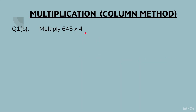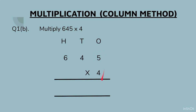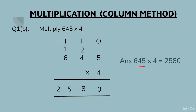Part (b): 645 × 4. Write the question and start with the ones column. 4 fives are 20 — write 2 at the top and 0 at the bottom. Then 4 fours are 16, plus 2 gives 18 — write 1 at the top and 8 at the bottom. Then 4 sixes are 24, plus 1 gives 25. Answer: 645 × 4 = 2580.